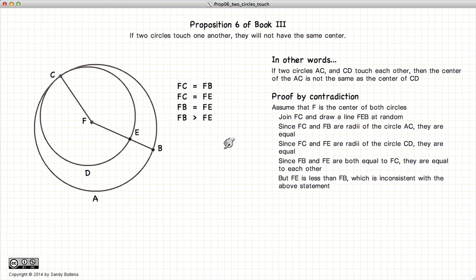So having established our contradiction, we have demonstrated that the point F cannot be the center of both circles. And there we have demonstrated this proposition.